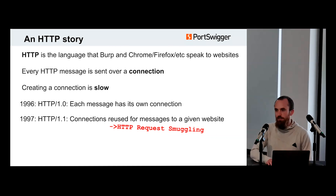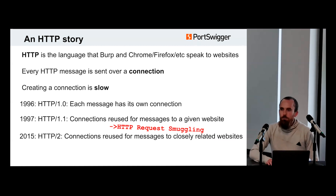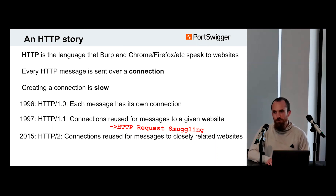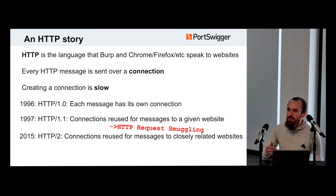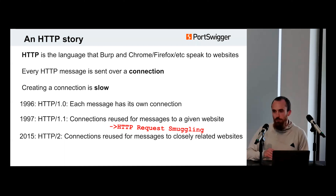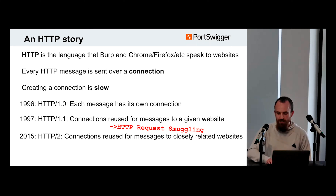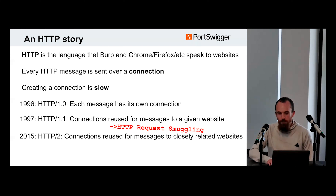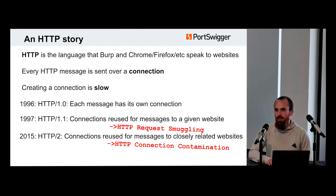Eventually they figured out how to stop request smuggling, and they put it in HTTP 2. That solved request smuggling, more or less. But they couldn't resist also trying to make things a little bit faster. They said, why don't we start using a single connection for multiple different websites, as long as those websites are closely related to each other? Sure enough, that made things faster, but it also introduced a new vulnerability called HTTP connection contamination.